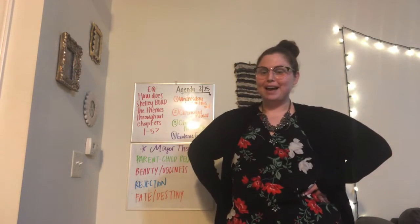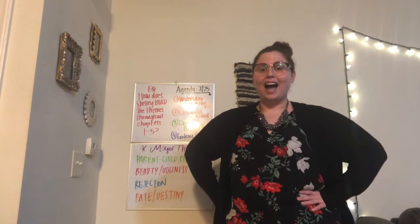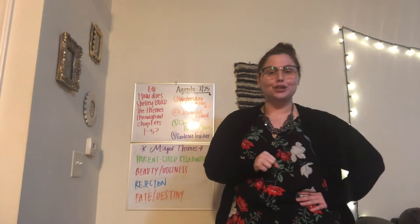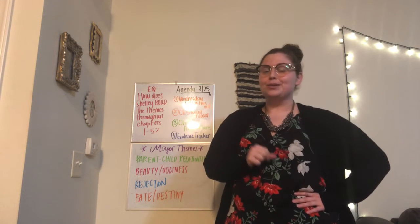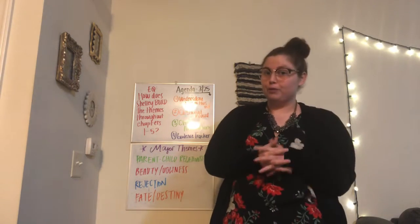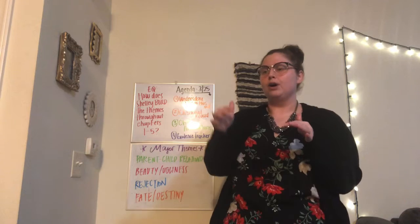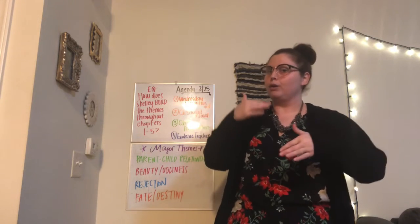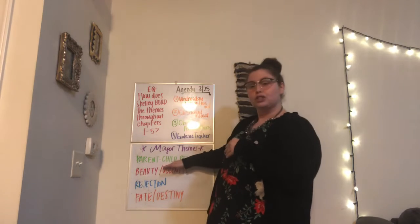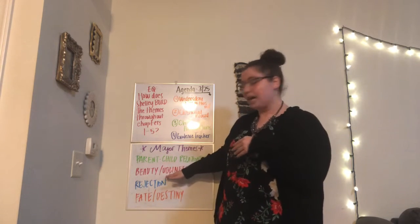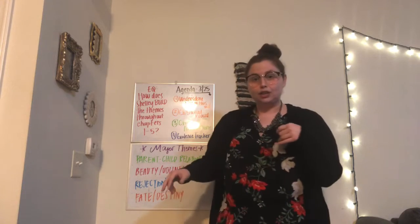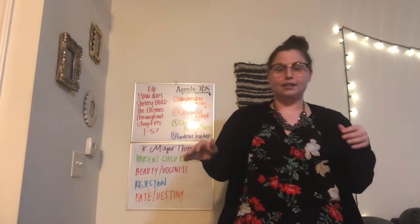Hi boys and girls, it's Miss Mac. I am without my videographer today — he is at work — but we're still going to continue with another lesson. Today is Wednesday, March 25th, and we're going to be talking about chapter 5 of Frankenstein. Before we read chapter 5, we've been delving into these themes: parent-child relationships, beauty and ugliness, rejection, and fate and destiny.